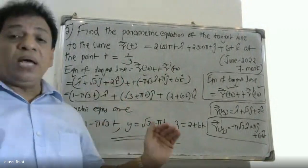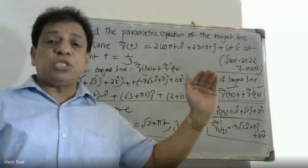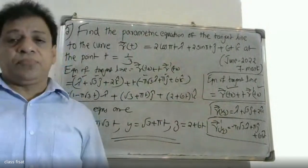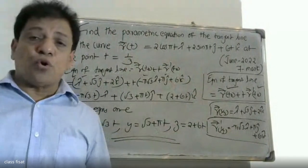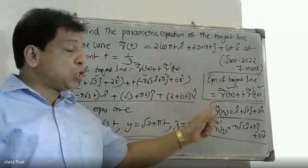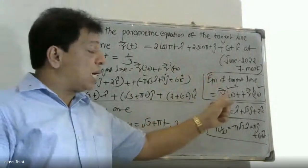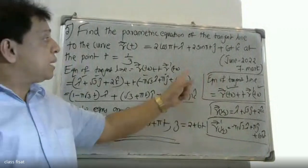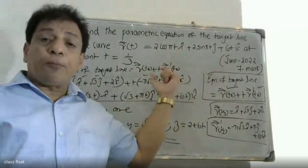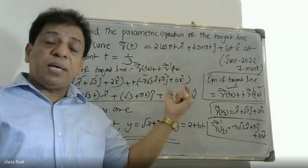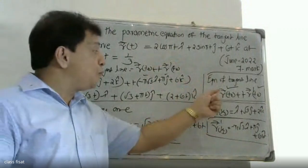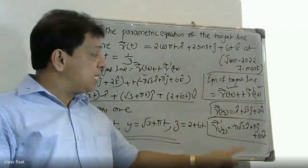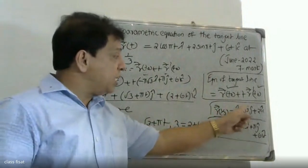If we find the parametric equation of the tangent line, we use the formula r(t₀) + t · r'(t₀). T₀ is equal to the given point, which is 1/3. Substitute into r(t₀): r(1/3) = i + √3·j + 2k. Then differentiate r(t) to get r'(t), and substitute t₀ = 1/3.